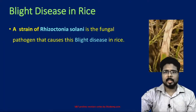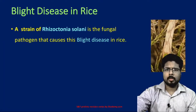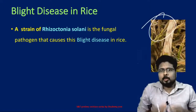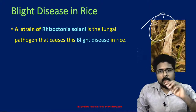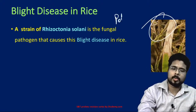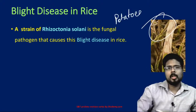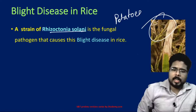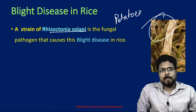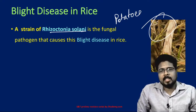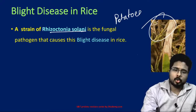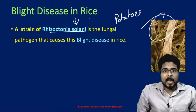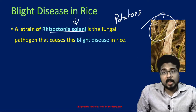First, blight disease in rice. This disease spoils the crops and is found in rice as well as in potatoes. A strain called Rhizoctonia solani is the fungal pathogen that causes the blight disease in rice. Remember: Rhizoctonia solani is the fungal pathogen responsible for blight disease in rice.